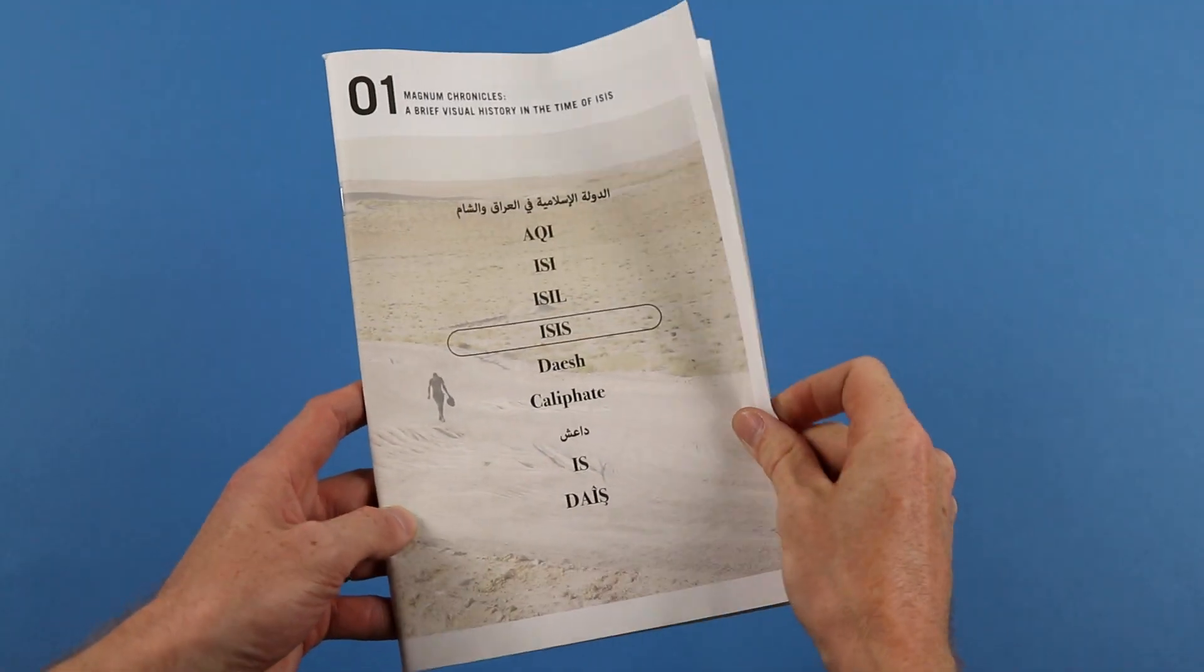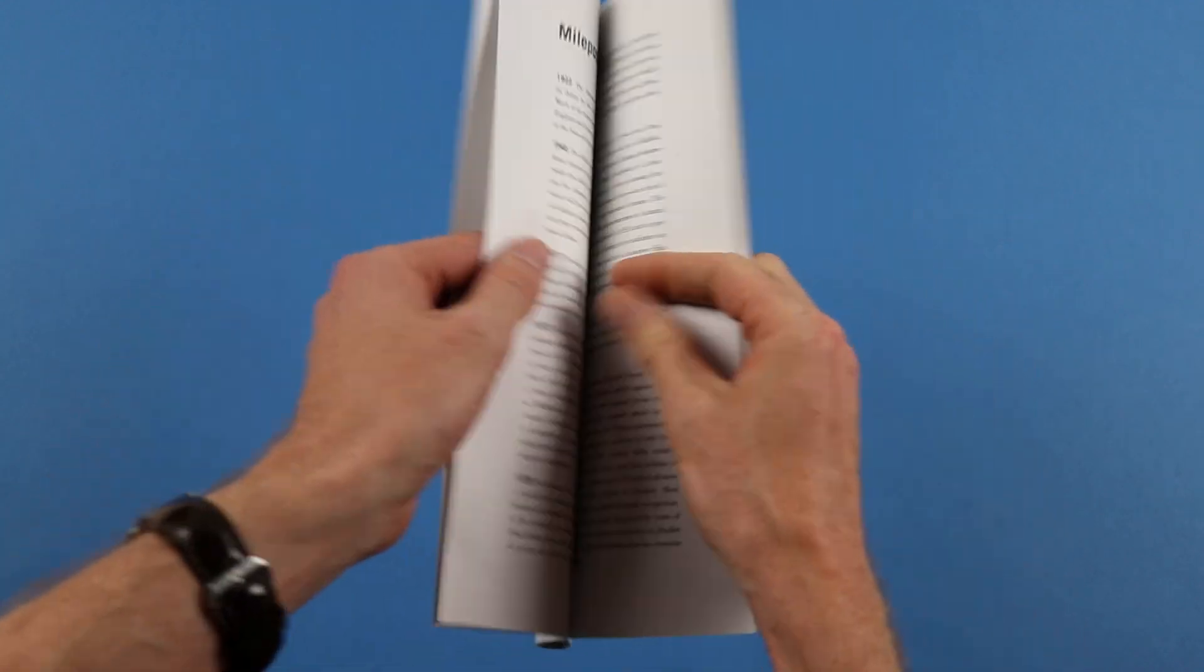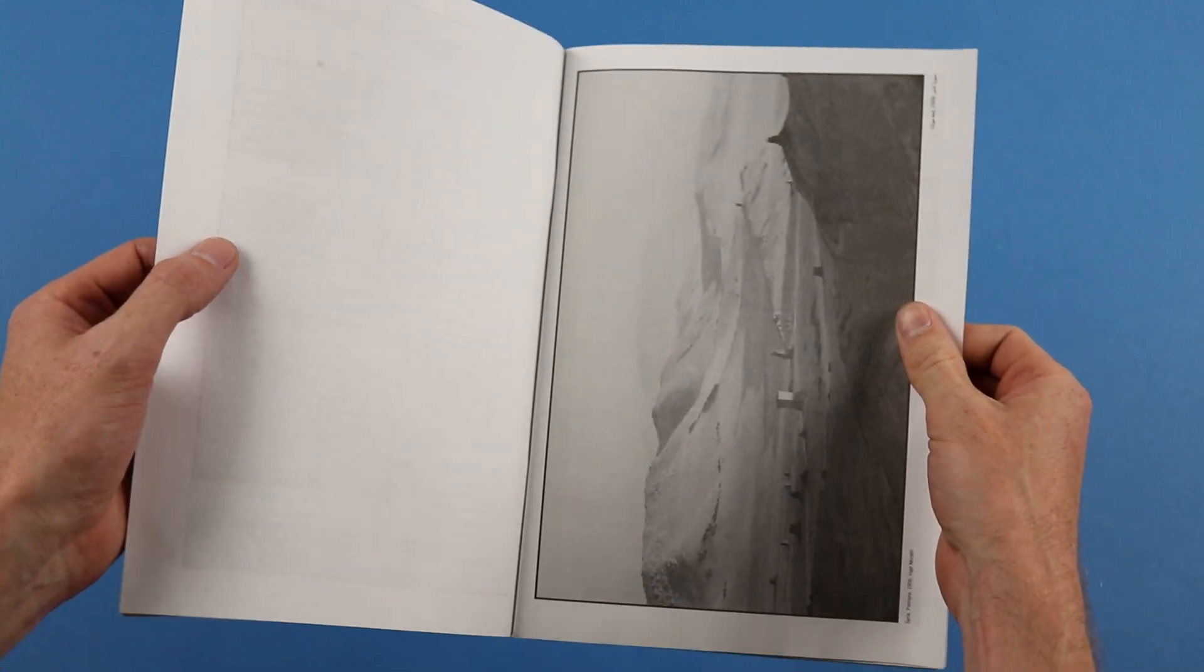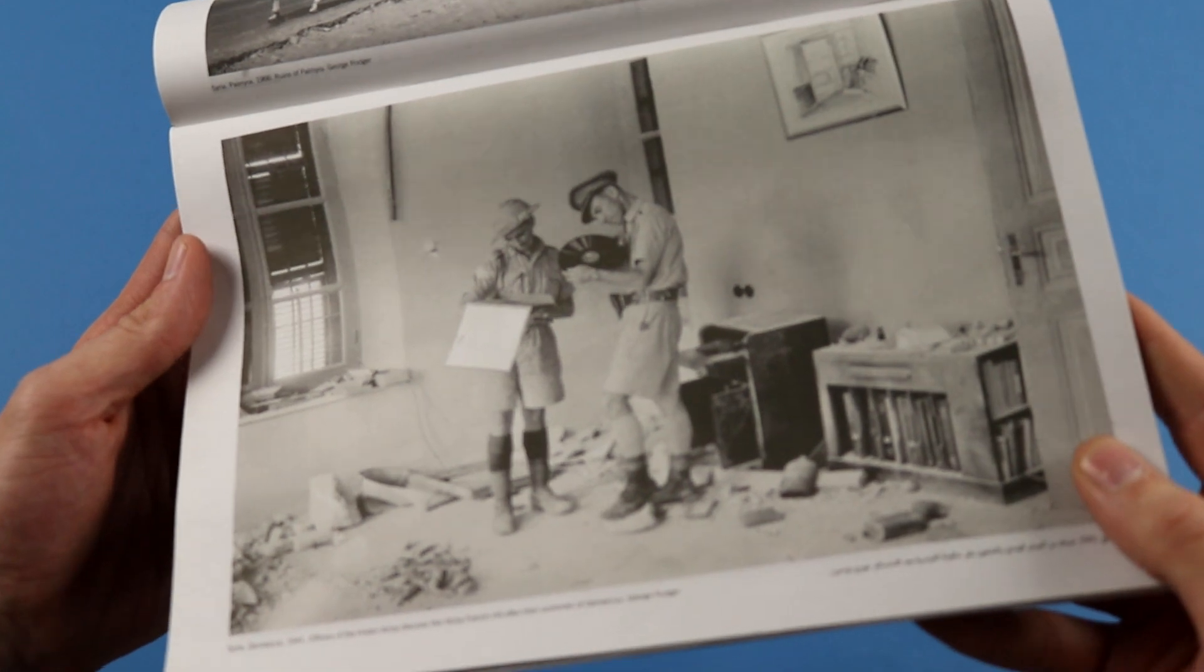A brief visual history in the time of ISIS is a great new magazine for Magnum Photos. As you can see here, the thing is printed on newsprint, printed by Newspaper Club, and they've delved into the Magnum archives to present amazing images like this.